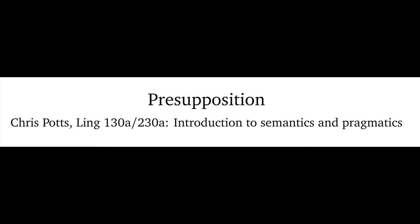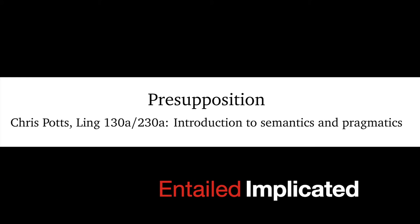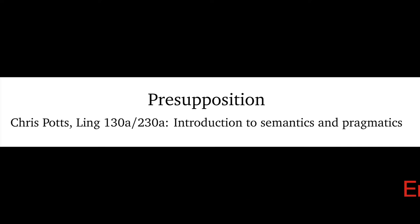At a high level in this course, we've seen so far two major ways that people can convey meaning in language: with entailed content, that is with the core of the semantics of the language, and with conversational implicatures. Presuppositions introduce a third major way that content can come across, and as we'll see, it's a quite different method from the first two with quite different linguistic and social consequences as a result.